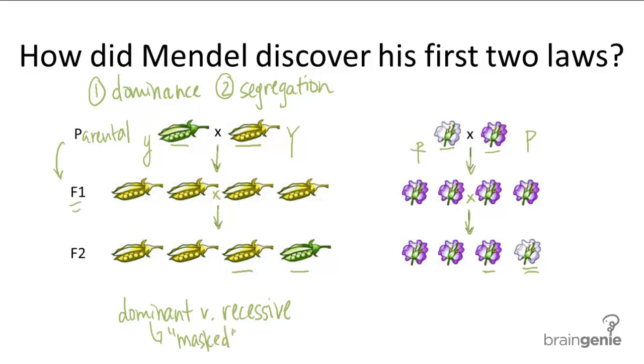But the information, the genetic information that codes for the recessive allele is still here within the F1 generations.